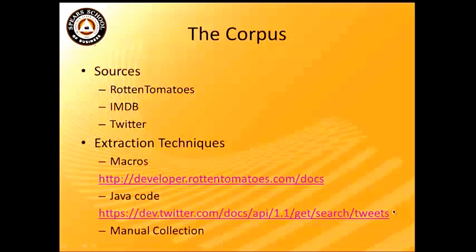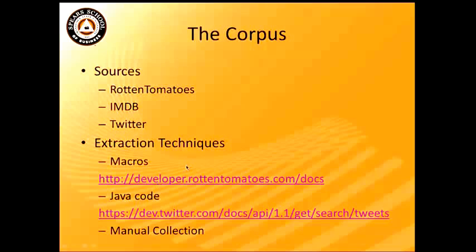Collecting movie reviews from multiple sources was a tricky part for us. We had to collect movie reviews from Rotten Tomatoes, IMDB, and Twitter. Rotten Tomatoes and Twitter have an API where we can write a program to interact with the API and get the required information. From Twitter, we can search for a hashtag and get tweets about a topic. Getting IMDB data required us to collect the reviews manually because it doesn't have an API.